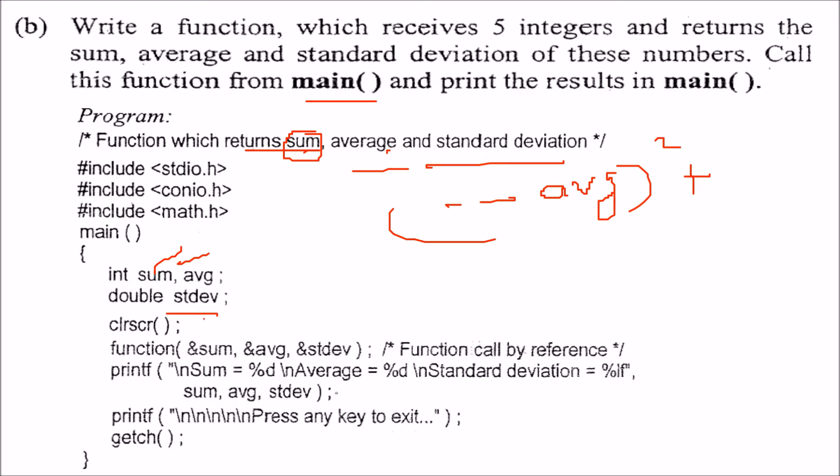This is sum average, double we take standard deviation, we pass this to sum average and STDV. Why? Because we want the change to be seen here and we print these values actually and we will print them and we come out.